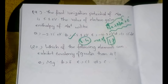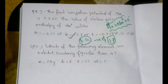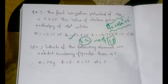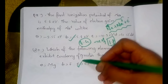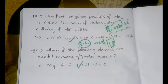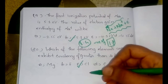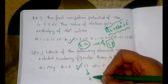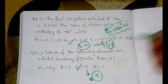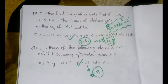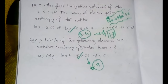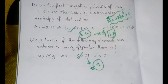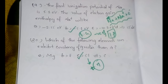The twentieth question: which of the following elements can exhibit covalency greater than 4? The answer is option C, chlorine. Chlorine can extend its covalency up to 7 due to the availability of empty d-orbitals. We will be discussing more questions from this part in the coming videos.